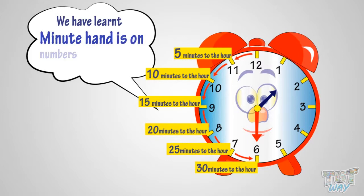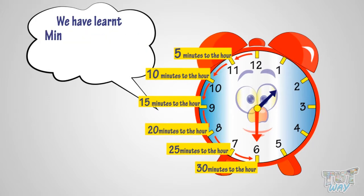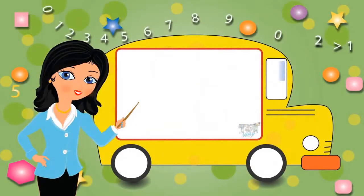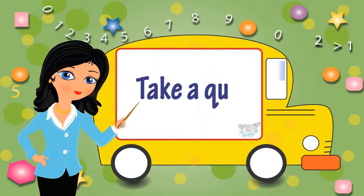So what have we learned? When the minute hand is on numbers seven, eight, nine, ten, or eleven, we tell time by minutes to the hour. And minutes to which hour? It is the hour to which the hour hand seems closer. Now go ahead and take a quiz to learn more!